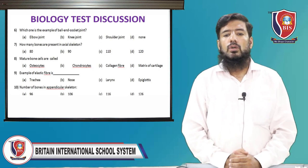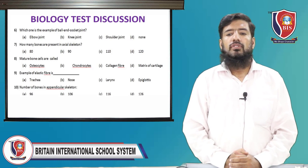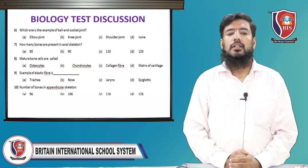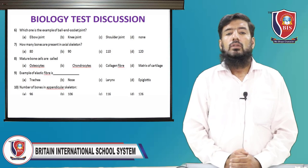MCQ 8: mature bone cells are called what? Option A is osteocytes. The other options are chondrocytes, collagen fiber, and matrix of the cartilage. Mature bone cells are called osteocytes — this is the correct option.